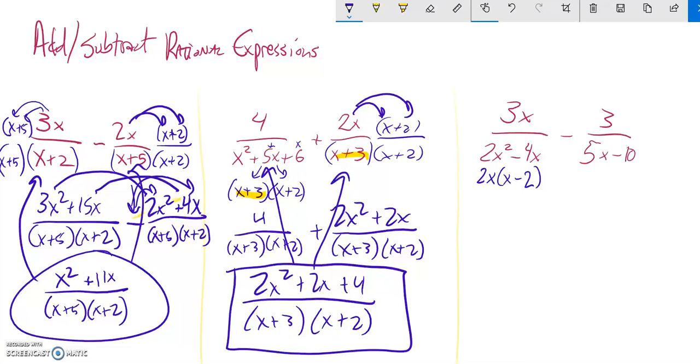Similarly, on this one, I can factor out a 5. What's left is x minus 2. I can see that they both have an x minus 2 in common. So I don't need to do anything for that. But this one needs a 5, so I'm going to multiply by 5 over 5 here. This one needs a 2x, so I'm going to multiply by 2x over 2x here.